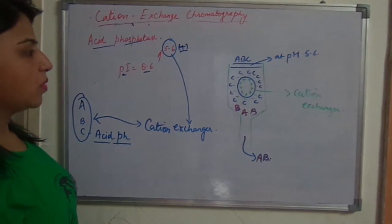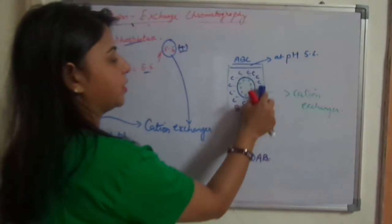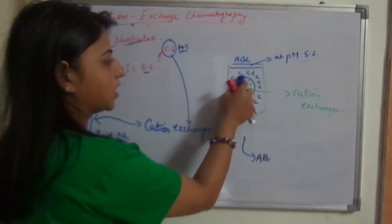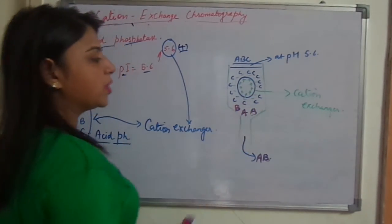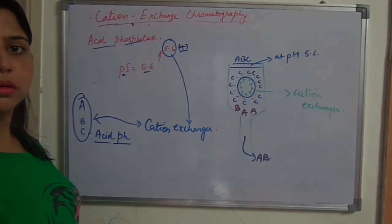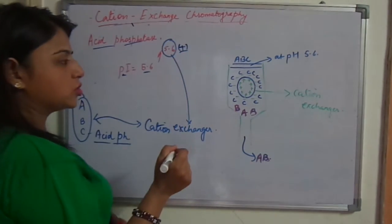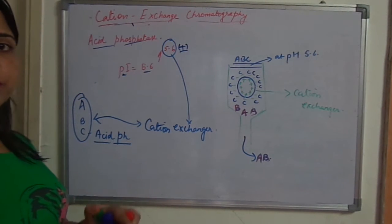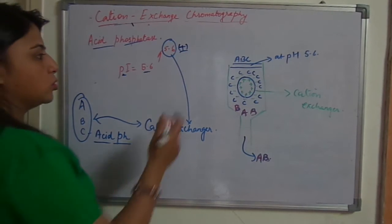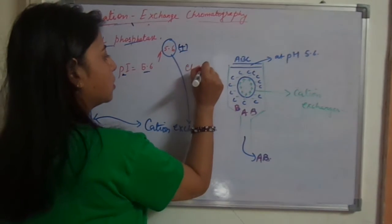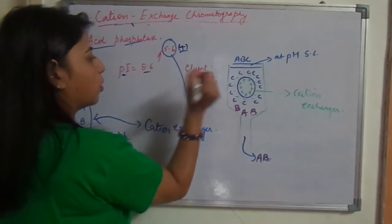Now what we have to do? Now we have to separate this C from the entire mixture, from this cation exchanger. To separate this C from the cation exchanger you will use an eluent. Eluent in case of cation exchanger should be one pH above, not below like in the case of anion exchanger. So eluent pH will now be 6.6, one pH above.